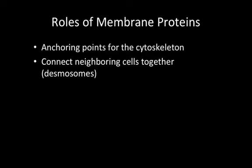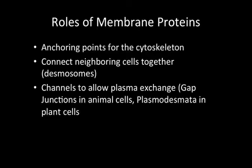Some act as channels to allow plasma exchange. In animal cells, we call these gap junctions. In plant cells, because they have to go through a cell wall, we call them plasmodesmata. Others are simply channel proteins to allow those polar or ionically charged particles to go through.